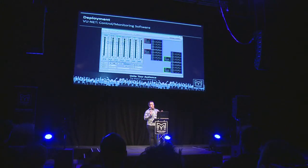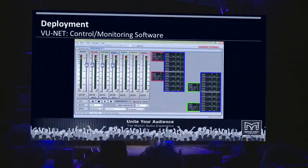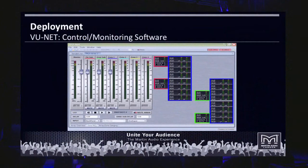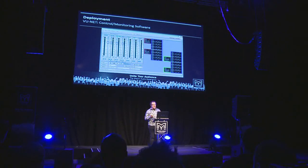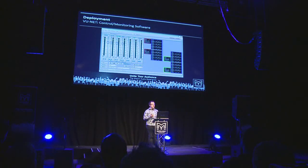All of the MLA Mini systems can be controlled by VueNet, which is a companion control and monitoring software application that runs on a laptop or tablet PC. You can connect via USB or via Ethernet and a Merlin network management hub. VueNet is where you can do the classic things like parametric EQ, time delay, mute the system, zone it, and so on. You can also monitor things like amplifier temperature.